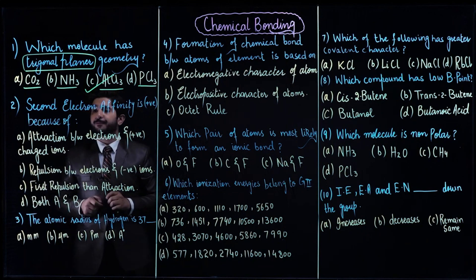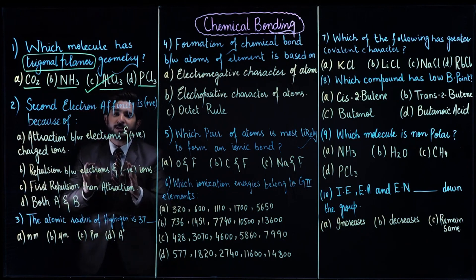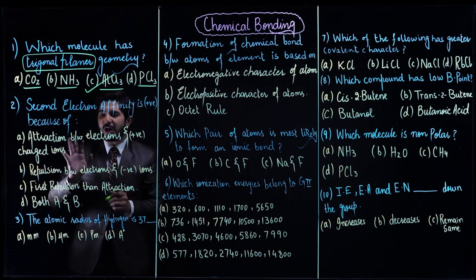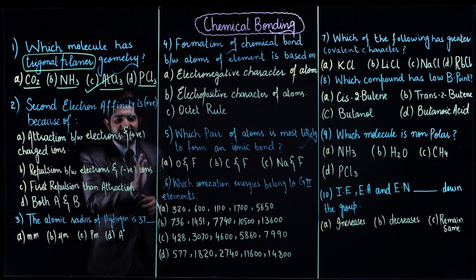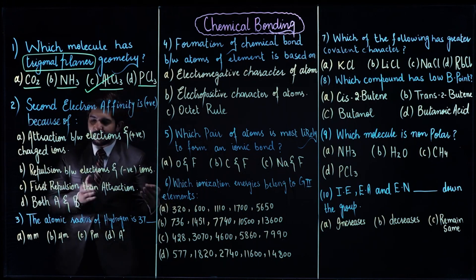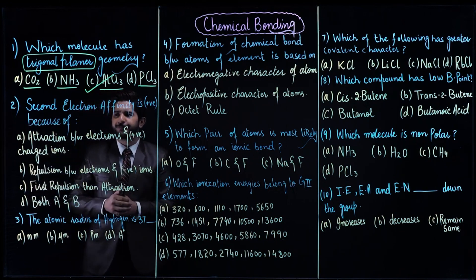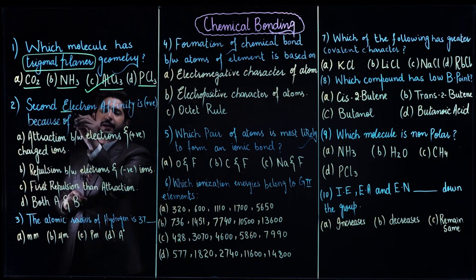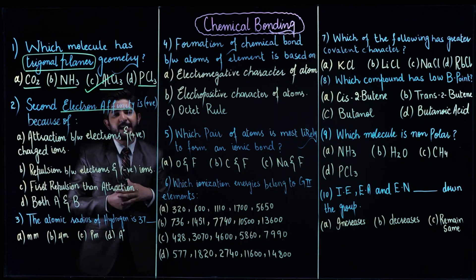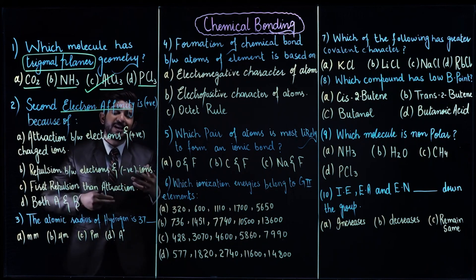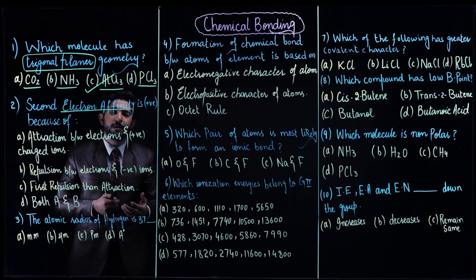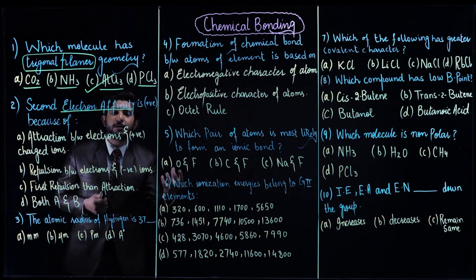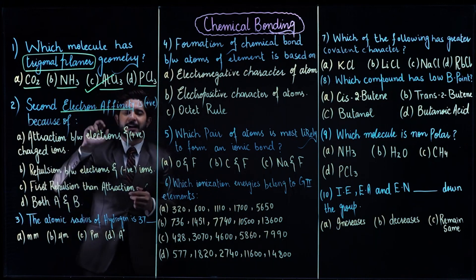Let's move to question number 2. What is electron affinity? Electron affinity is the amount of energy that is required or released when an electron is added to the gaseous atom — when an ion is formed and an electron is added to it, the energy change that occurs is electron affinity.